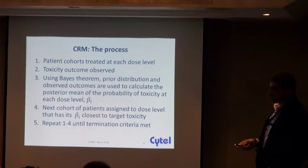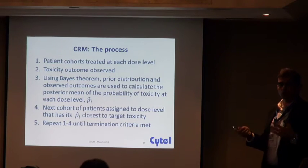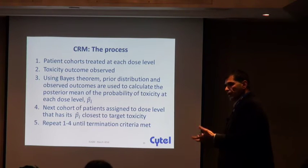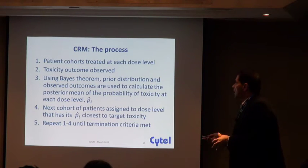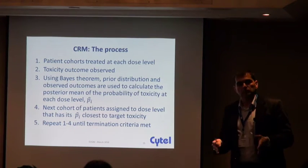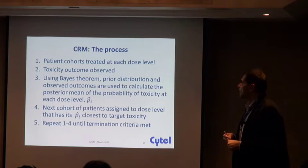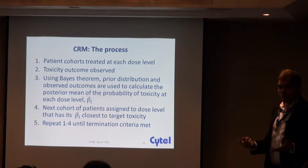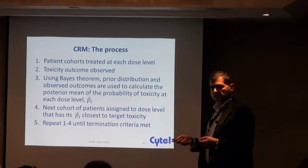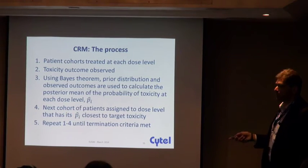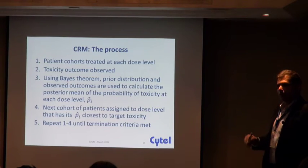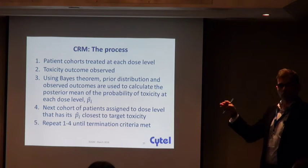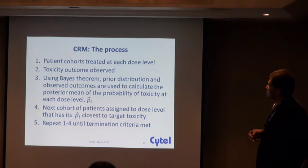The algorithm works by treating subjects at each dose level, observing toxicities, and utilizing the prior distribution combined with observed toxicities to calculate the posterior average probability of toxicity at each dose level. The next cohort is assigned to the dose level whose average posterior probability of toxicity is closest to the target. The algorithm continues until the maximum sample size is reached or a stopping rule is met.